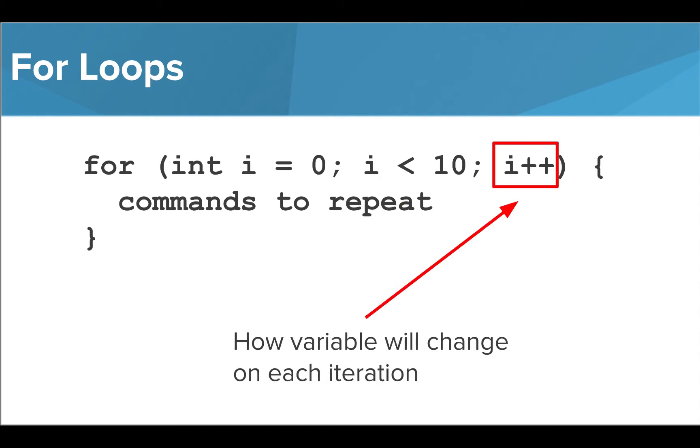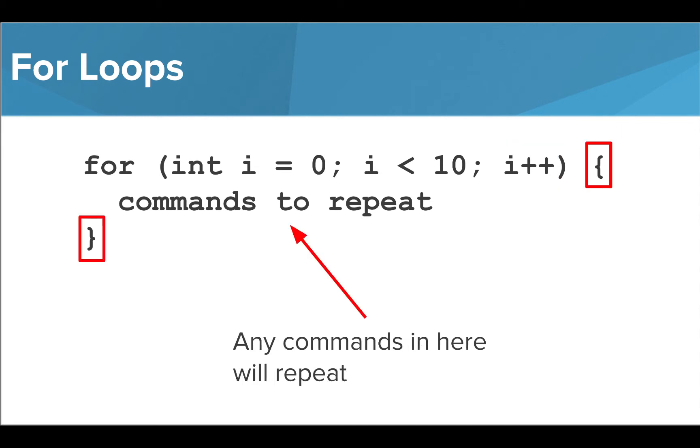Lastly, after another semicolon, we write how we want the value of i to be altered on each iteration. Here, we are adding 1 to the value of i each time, but we could write i plus equals 2 to count by 2s, or i minus minus to subtract 1 on each iteration. Indented inside a set of curly braces, we write all the commands we want to repeat.